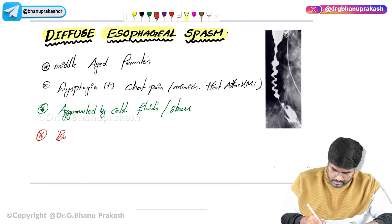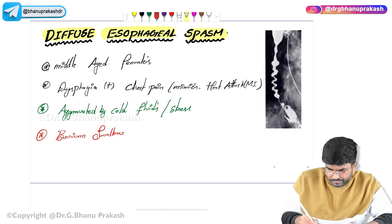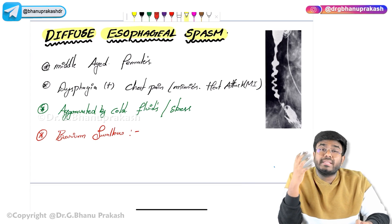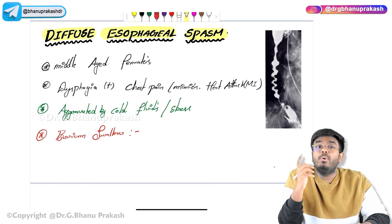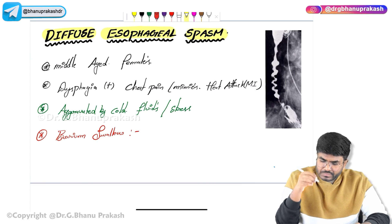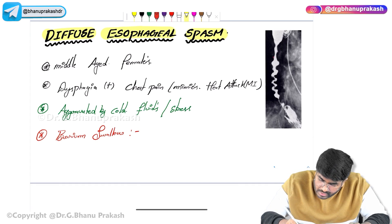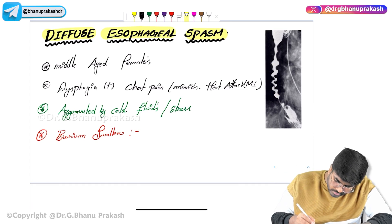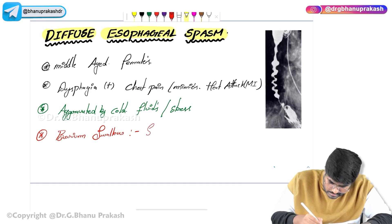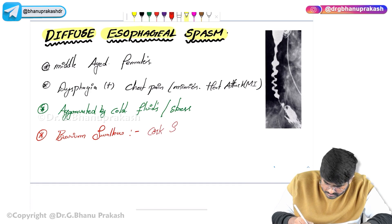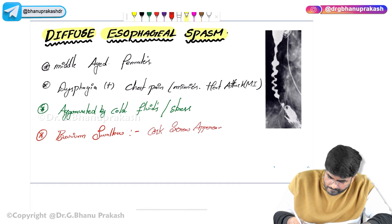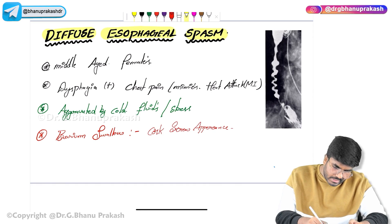On barium swallow, in achalasia cardia we see a bird beak or rat tail appearance. But in diffuse esophageal spasm, because of the abnormal contractions the esophagus looks like a corkscrew. So on barium swallow, there is a corkscrew appearance.